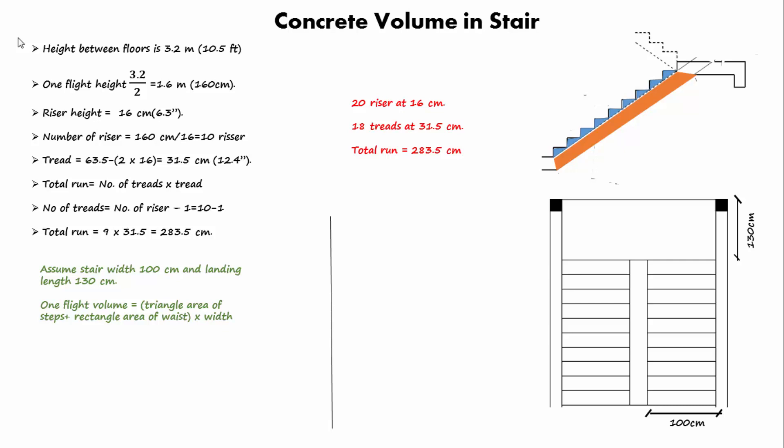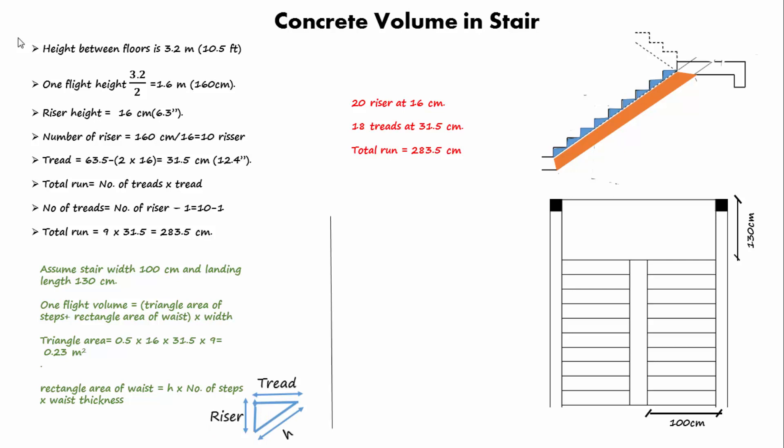The concrete volume in one flight equals the triangle area of steps plus the rectangular area of waist, multiplied by the width. The triangle area of steps equals 0.5 × 16 × 31.5 × 9. The rectangular area of waist equals the hypotenuse of a step × number of steps × waist thickness. We need to find the hypotenuse of the step.